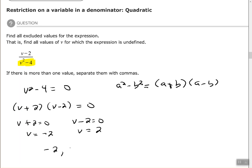So my excluded values, it says to separate them with commas, are negative 2 and 2. So the process is the same except now you may have to use factoring to find your excluded values.